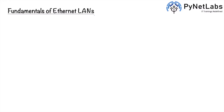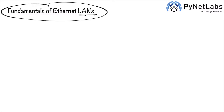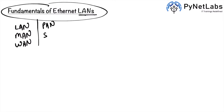Welcome back to another video in our CCNA video series. In this video we're going to talk about fundamentals of Ethernet LANs. When we talk about local area networks or LANs, there are so many names for types of networks: local area network, metropolitan area network, wide area network, and smaller ones like personal area network, storage area network, and campus area network.